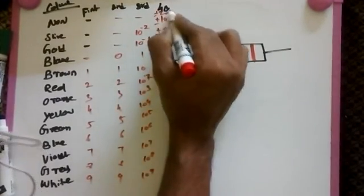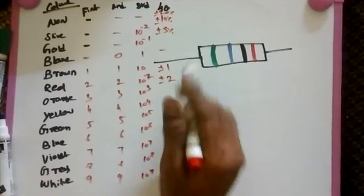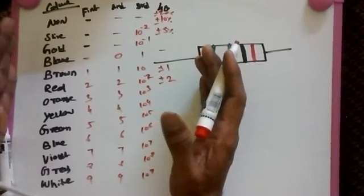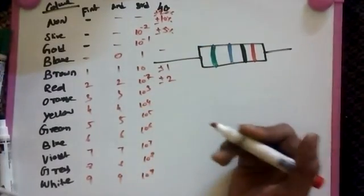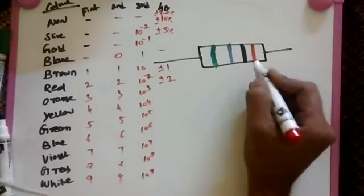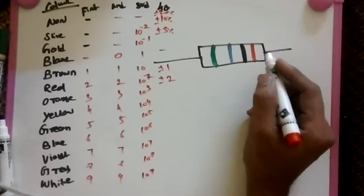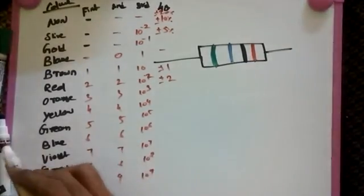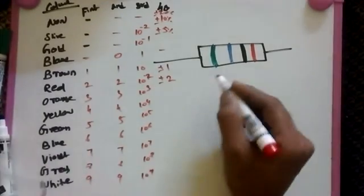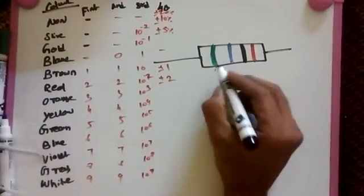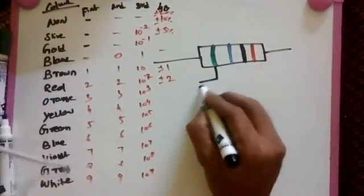Now we are going to find the resistor value. This one is first color, what is this? This one is first band, so first one is green.